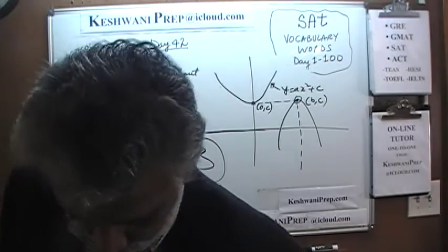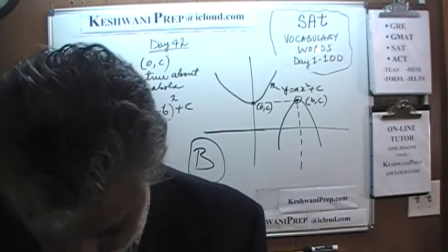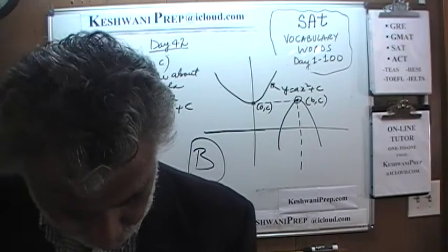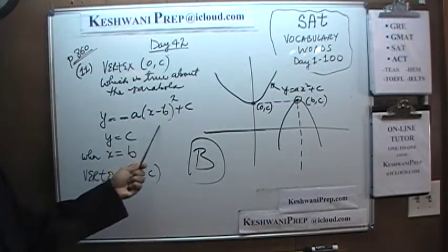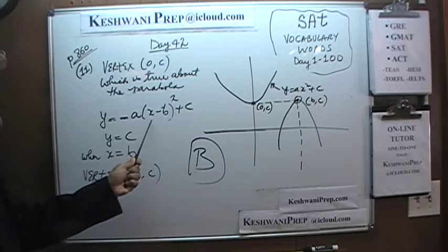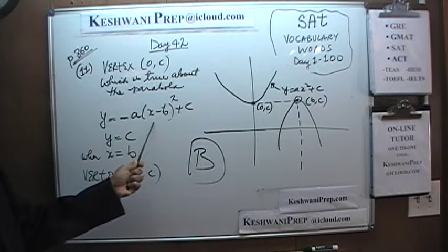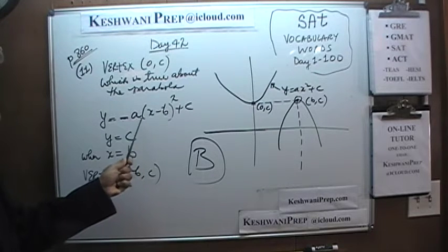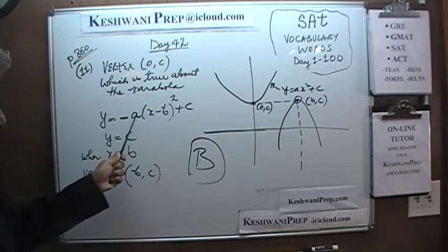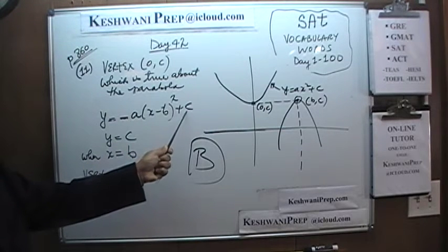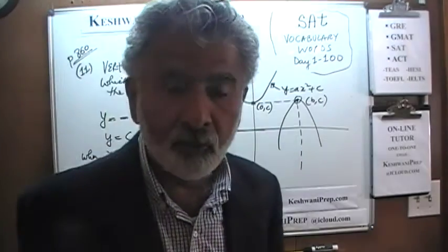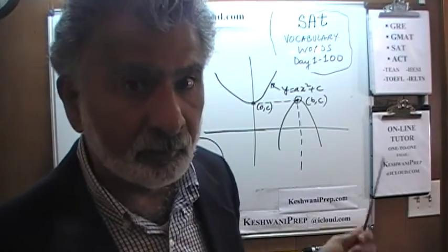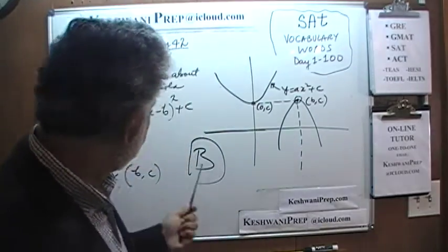We had already knocked out A and C. We can knock out D as well, because D says negative b. Had it been negative b, we'd end up with negative b minus b equals negative 2b, which gives us 4 times b squared times a, taking some quantity away from c — so y would no longer be at maximum. The answer is B.